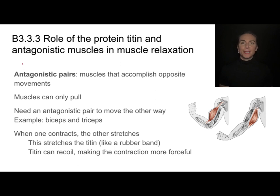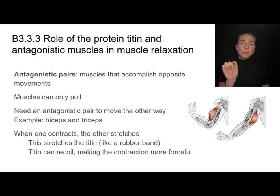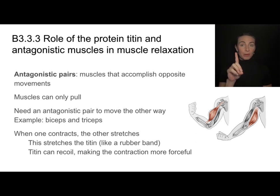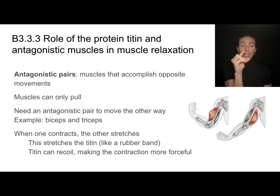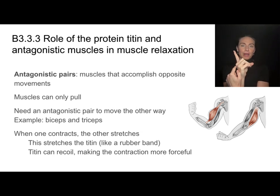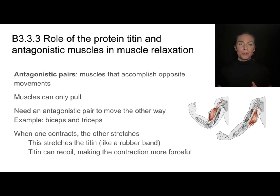Here's a great connection to your Lang and Lit class — the antagonist in a story is someone doing the opposite thing as the hero. We have the same meaning here for antagonistic muscle pairs. All of your muscles come in pairs because muscles can only accomplish one movement — the only thing muscles can do is pull. So for a muscle to pull in one direction, if you want your joint to move in the opposite direction, you need a muscle that will pull in the opposite direction. All muscles occur in antagonistic pairs because they pull in opposite directions.